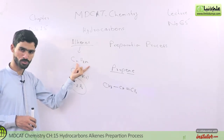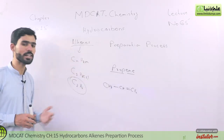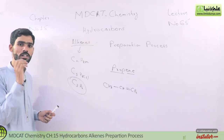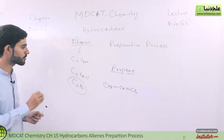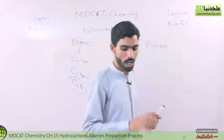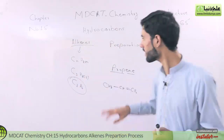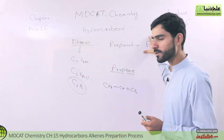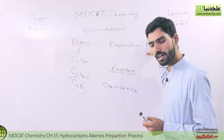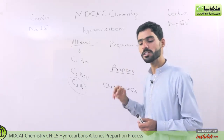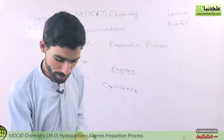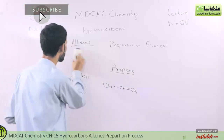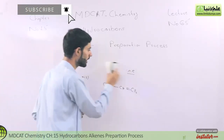Alkenes are highly reactive species. If we talk about preparation methods, we have 3 preparation methods for Alkenes. The first one is dehydrohalogenation.